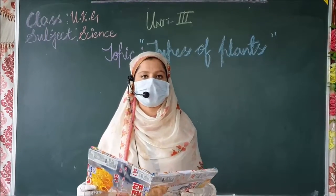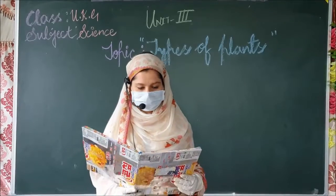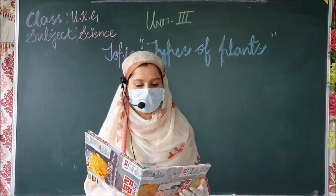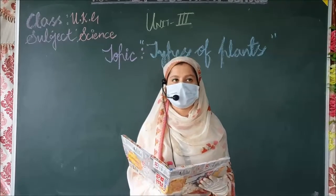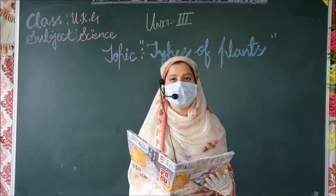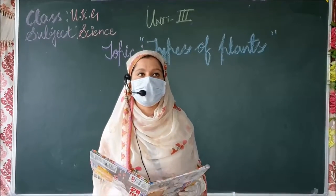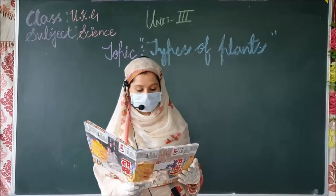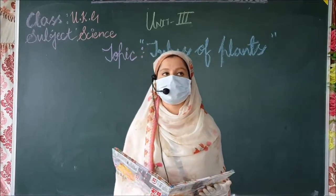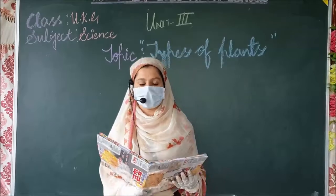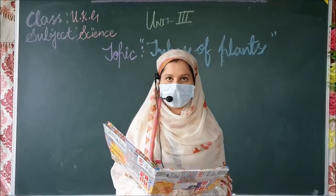Unit 3rd का पहला topic है types of plants. Types of plants का मतलब है कि plants जो होते हैं, पेड़ पौधे, उनकी बहुत सारी किस्में होती हैं और हमने बहुत सारे plants को देखा भी होगा. तो पहले हम reading करेंगे, साथ-साथ मैं आपको इसका meaning भी समझाऊंगी. We see many plants around us.